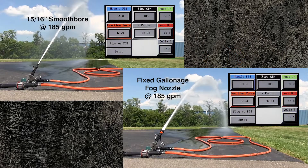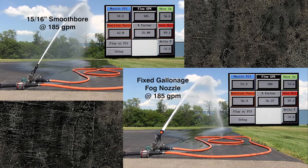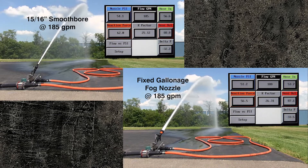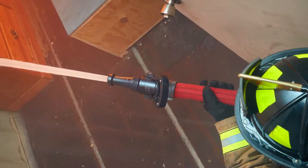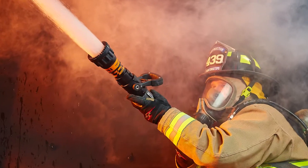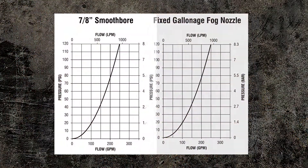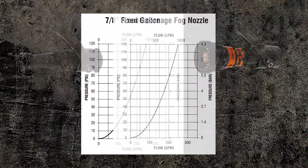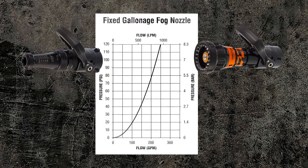If a 15/16 inch smoothbore was selected, we'd get a different flow and pressure curve, and the appropriately matched fixed gallonage nozzle would perform the same. Whether it's a smoothbore or fixed gallonage fog nozzle, you get the same results. The formulas and the field test experiments agree.